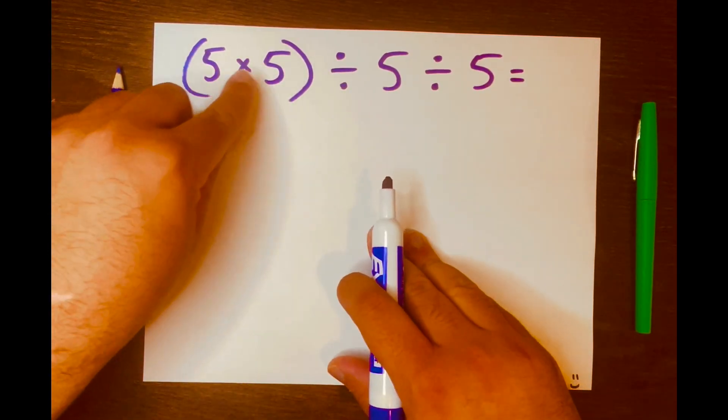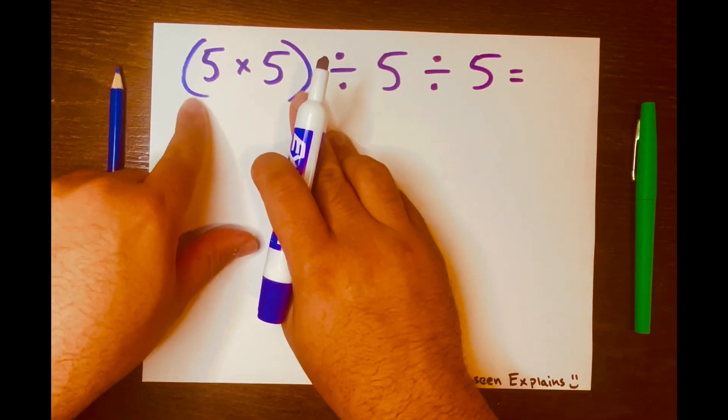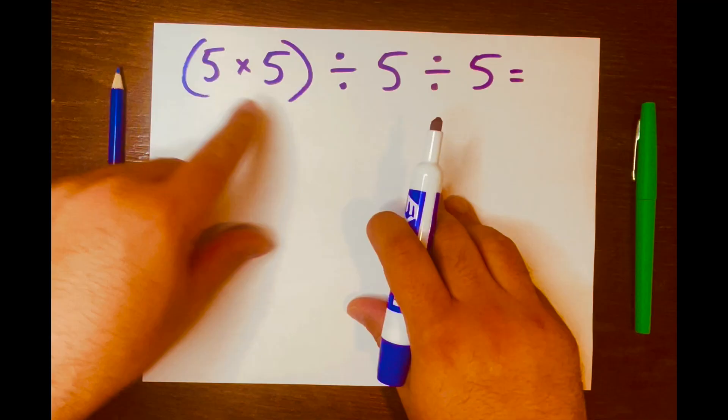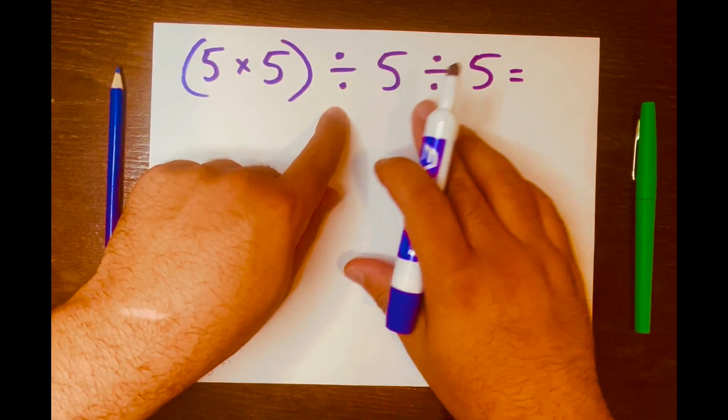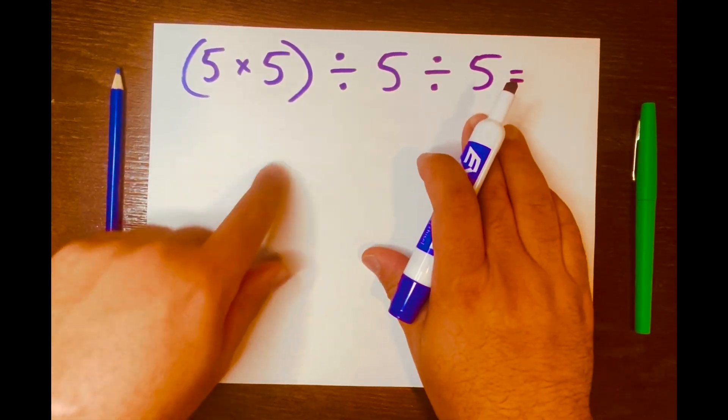We have 5 times 5 inside these parentheses divided by 5 divided by 5. So the first thing I'm thinking of is PEMDAS.